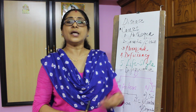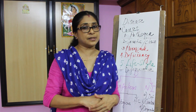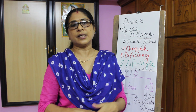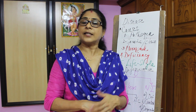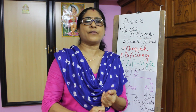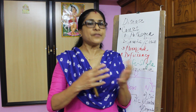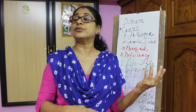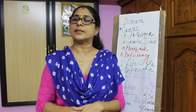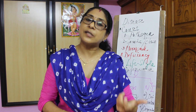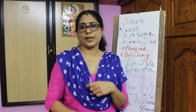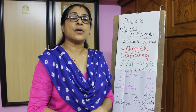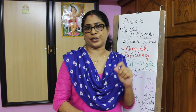Let us pass on to the next cause — deficiency diseases. There are diseases caused when a particular nutrient is in deficient amount in our daily diet, due to deficiency of vitamins or minerals. For example, night blindness is caused due to deficiency of vitamin A. Rickets is caused due to deficiency of vitamin D. Iodine deficiency causes goiter. Anemia is caused due to deficiency of iron.